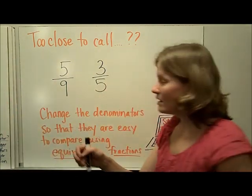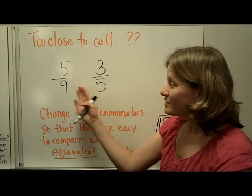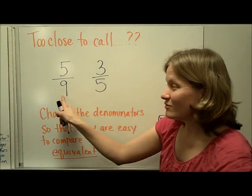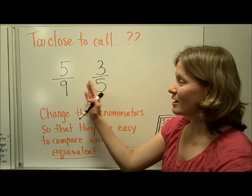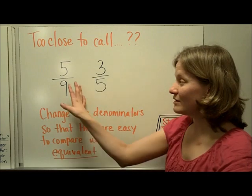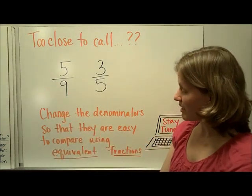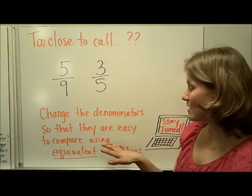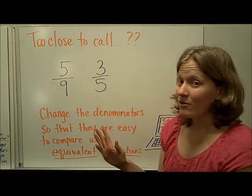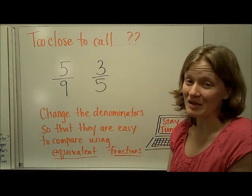Sometimes we'll come across fractions that are really too close to call. Both fractions may be bigger than one-half, and we can't easily model or use the other strategies on them. When you get to fractions like this, your strategy is going to be to change the denominators so that they are easy to compare using equivalent fractions. Stay tuned because equivalent fractions will be up next.